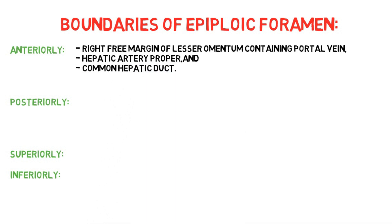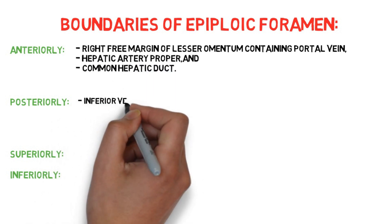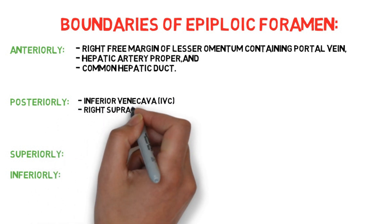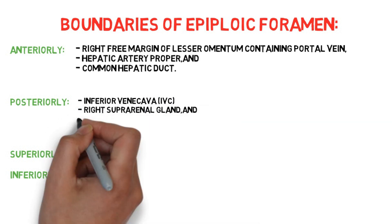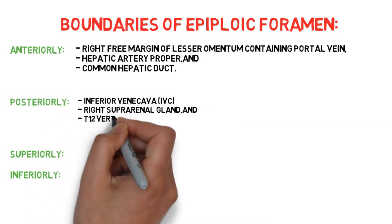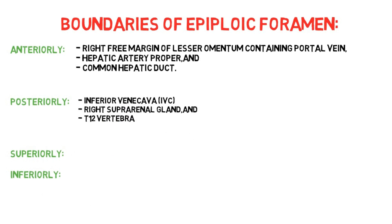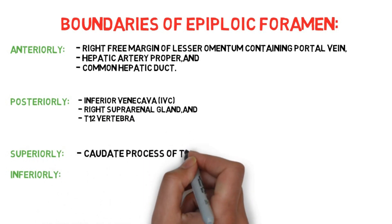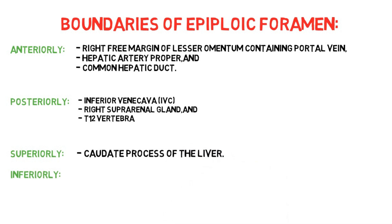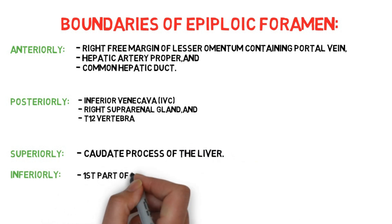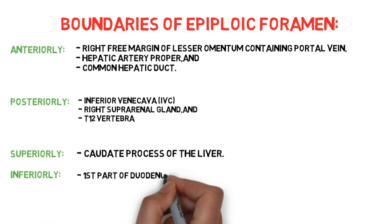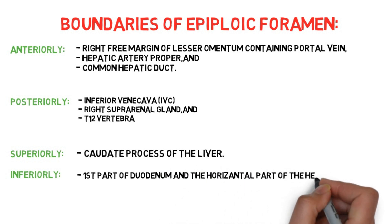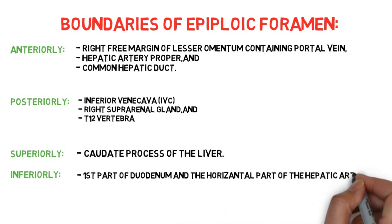Posteriorly, the epiploic foramen is bounded by the inferior vena cava (IVC), right suprarenal gland, and 12th thoracic vertebra. Superiorly, it is bounded by the caudate process of the liver. Inferiorly, it is bounded by the first part of the duodenum and the horizontal part of the hepatic artery.